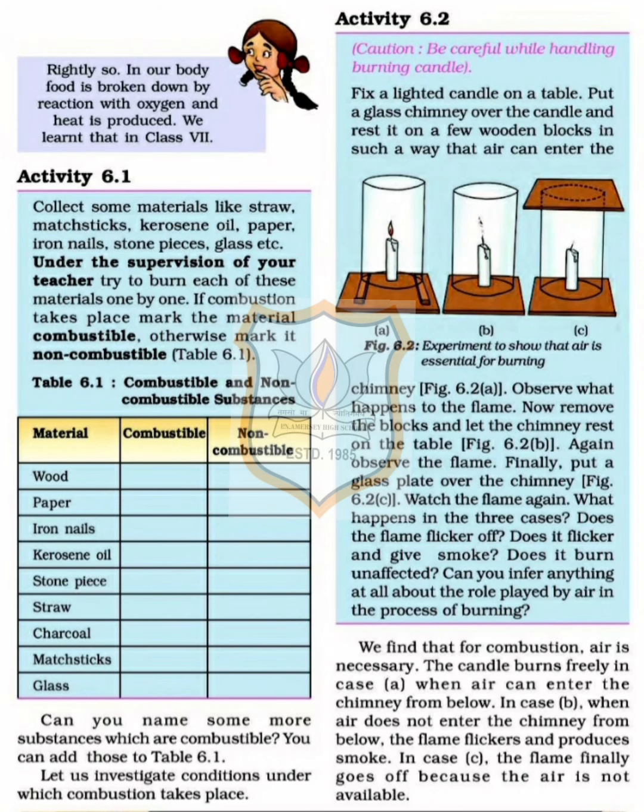Now page 65, Activity 6.1. Collect some materials like straw, matchstick, kerosene oil, paper, iron nails, stone pieces, glass, etc. Under the supervision of your teacher or a parent, try to burn each material one by one. If combustion takes place, mark the material as combustible; otherwise mark it as non-combustible. In the table: wood — combustible, paper — combustible, iron nail — non-combustible, kerosene oil — combustible, stone piece — non-combustible, straw — combustible, charcoal — combustible, matchstick — combustible, glass — non-combustible.